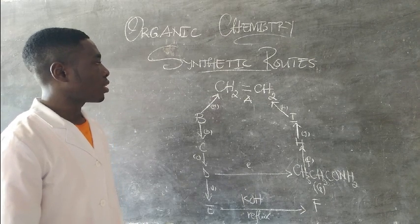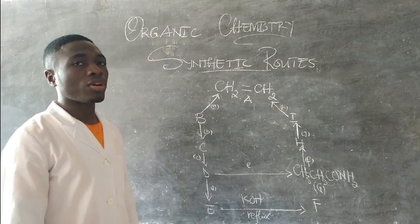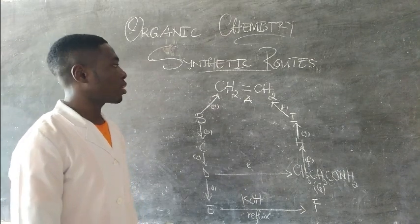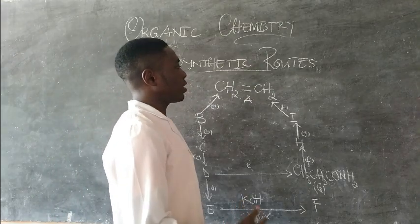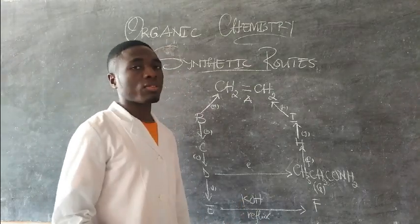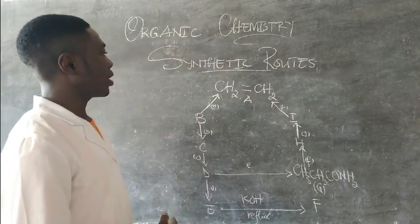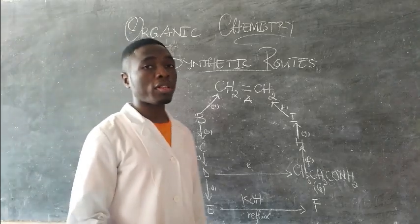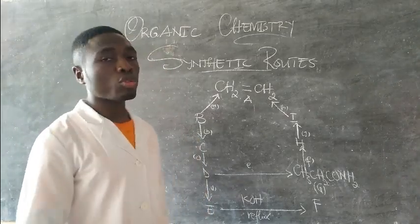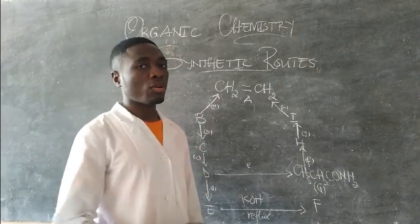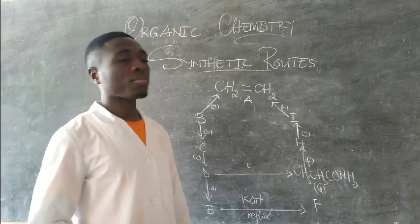Welcome back to the continuation of our lecture on synthetic routes. After we have had the direct sequence — the synthetic route on the conversion of ethanol to propanol, and from ethanol to methanol — we have seen the step-up and the step-down reaction.